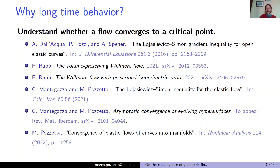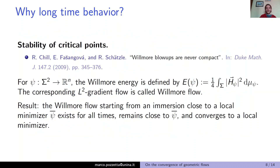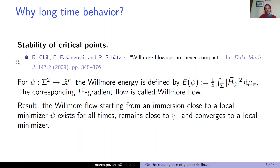Another spontaneous question is about the stability of critical points. I want to discuss it by mentioning a specific example given by the beautiful paper by Chil, Fašangová and Schätzler from 2009, which is more or less the first example of application to a modern gradient flow of the theory of Łojasiewicz-Simon inequalities developed by Chil in a 2003 work. They studied the Willmore flow of surfaces in R^N.